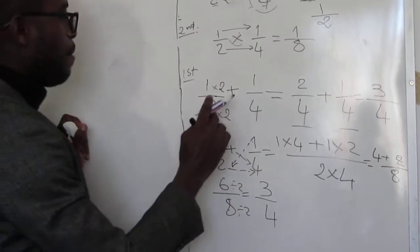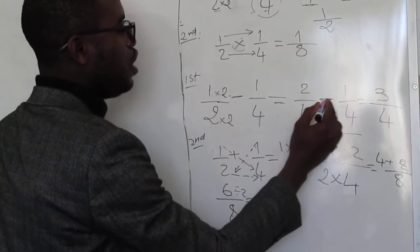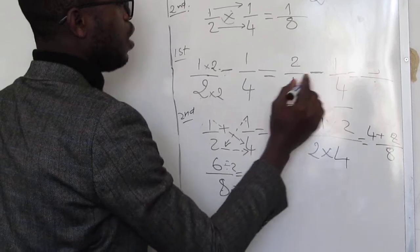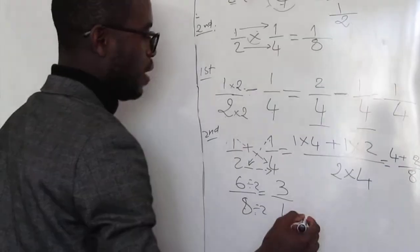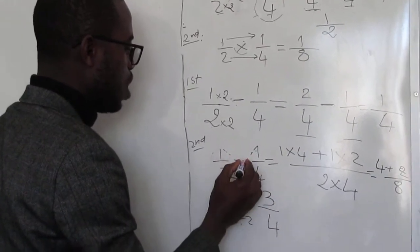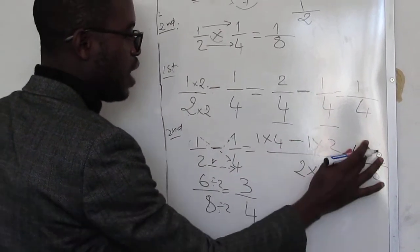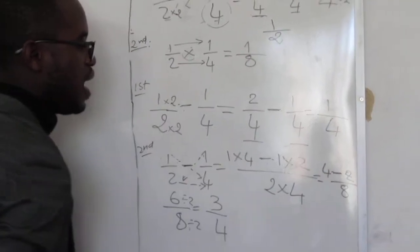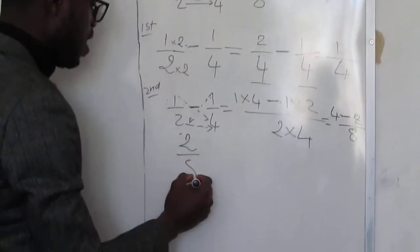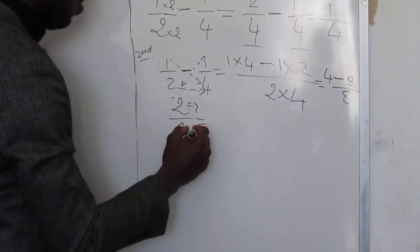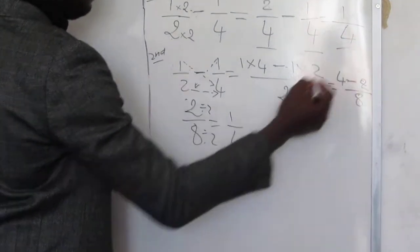If it was minus, we do the same thing — only the sign in the middle changes. For the second method with subtraction: 1 times 4 minus 1 times 2, over 2 times 4, gives us 4 minus 2 over 8, which is 2 over 8. We divide by 2: 2 divided by 2 is 1, and 8 divided by 2 is 4. So the answer is 1 over 4. The same process, same answer.